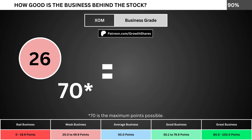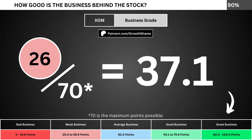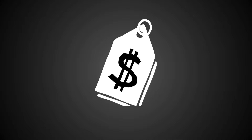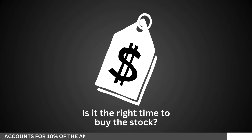Adding everything together, we divide the points awarded by the maximum points possible, which is 70. That gives us the business grade for the company. We want the business grade to be above 50, meaning it has a better than average business.